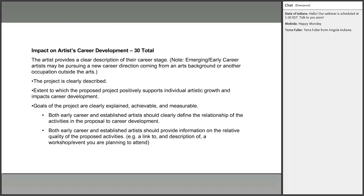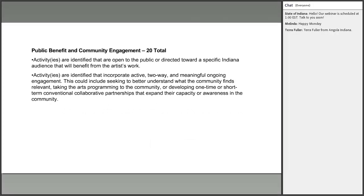Both early career and established artists should provide information on the relative quality of proposed activities — for example, providing a link to or description of a workshop or event you plan to attend. The next criterion is public benefit and community engagement, worth 20% of your points. Feel free to throw questions into the chat box and I will address them at the end.